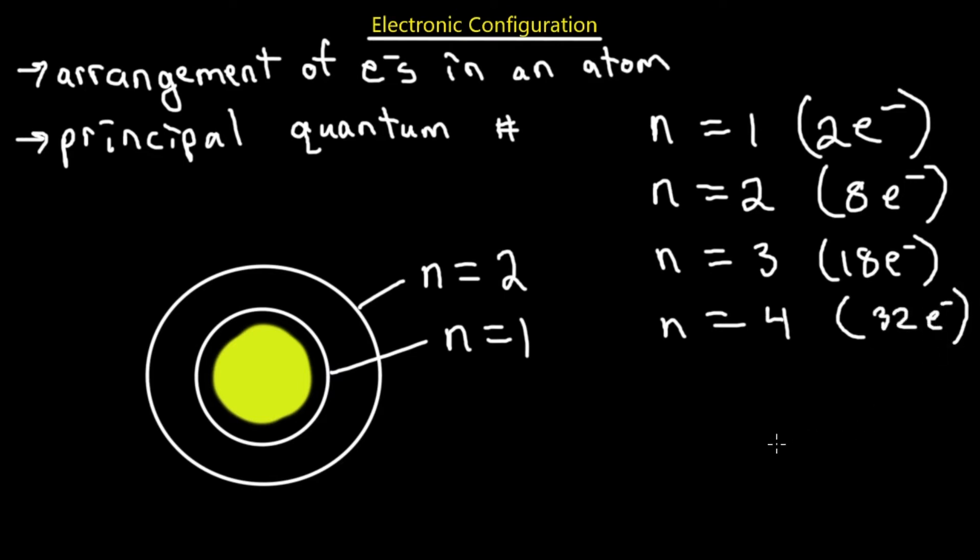The further you go from the nucleus, the higher the energy of the electrons, because it takes more energy to get away from the positively charged nucleus than to stay close to it. Those electrons on the outer shell — the valence shell, as we call it — will therefore be highly energetic.